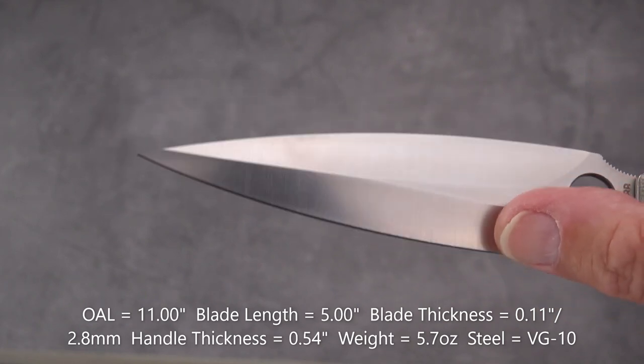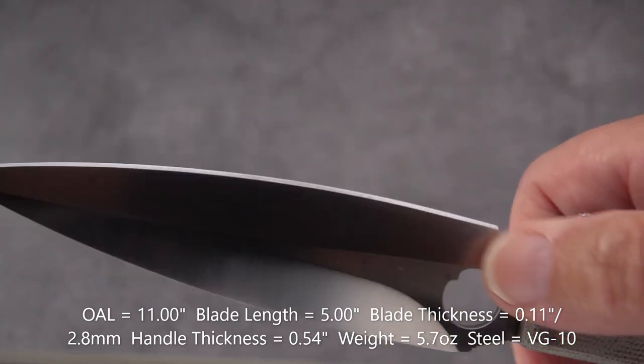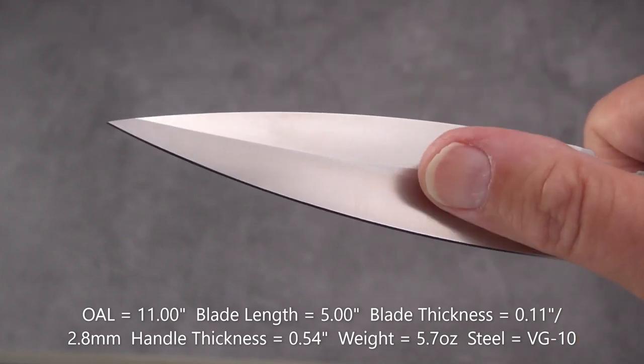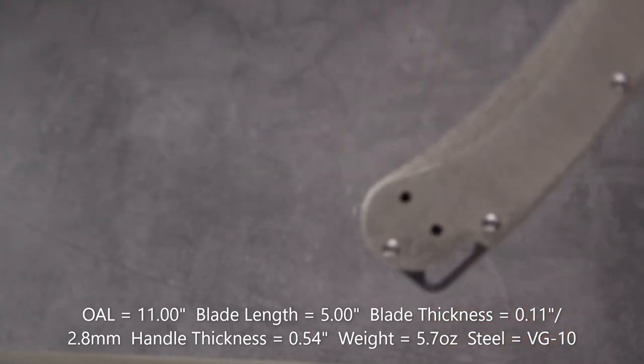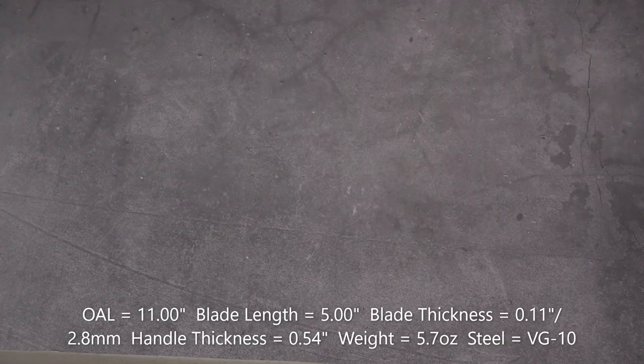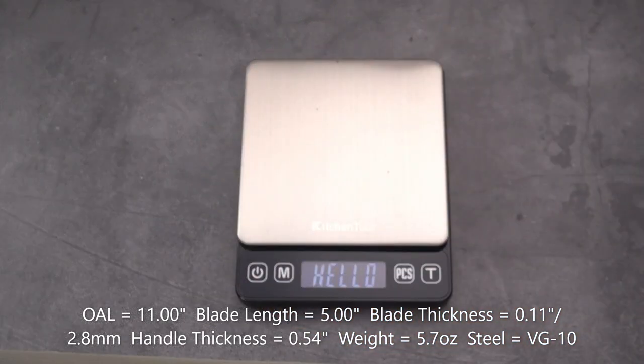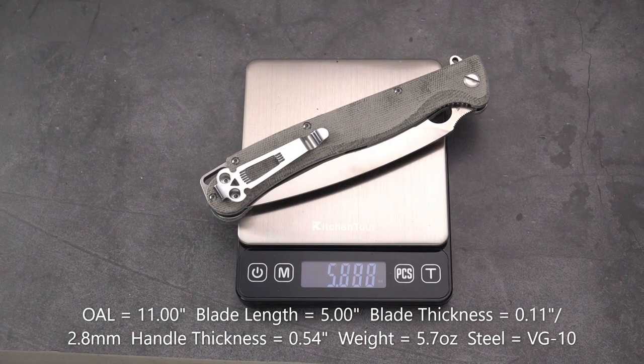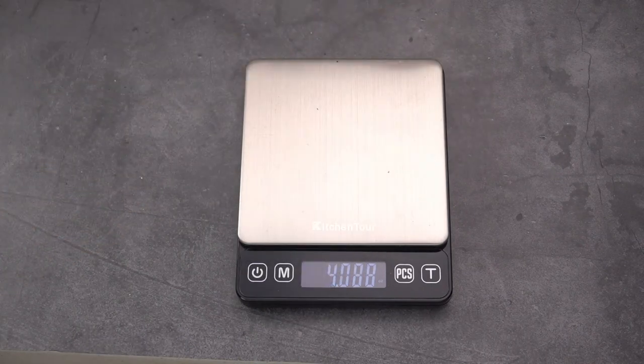Thin blade stock yet not an overly thin point. That's a good thing with that low grind - it keeps it a little more slicey than you would expect. It is a flat grind on the cutting edge. The original was pretty heavy. Let's see the weight on this guy - 5.7 ounces, not inordinately heavy for an almost 11-inch knife.